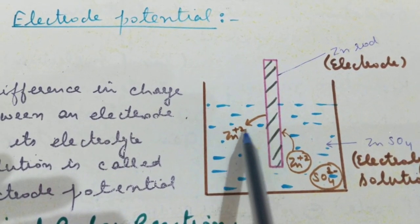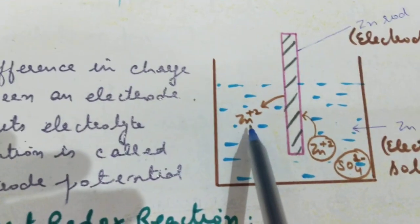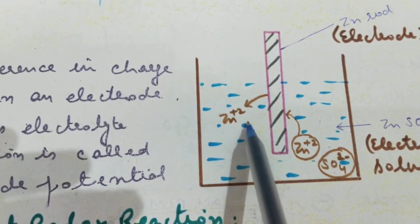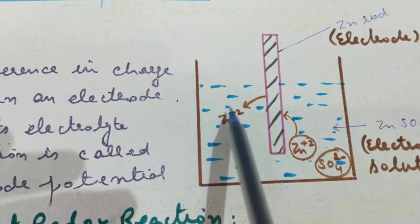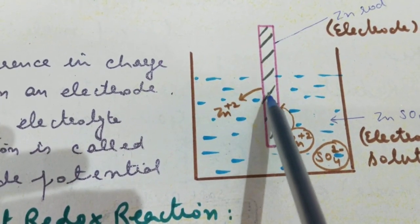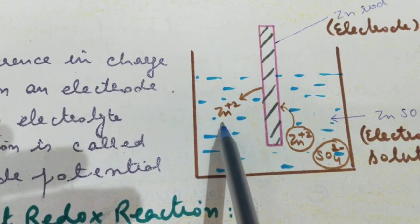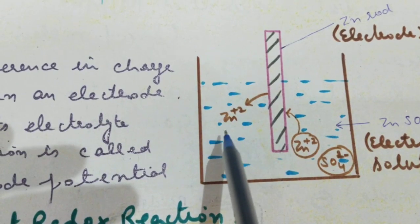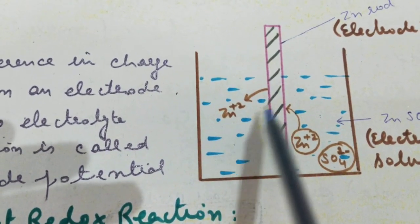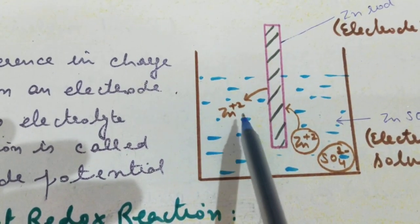Zn+2 ions come to the solution and there is no extra sulfate ion to neutralize this Zn+2 ion. Like this, one Zn+2 ion is coming to the solution, and like this, many more Zn+2 ions may come to the solution from the rod.